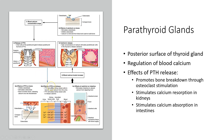Parathyroid hormone also works on the kidneys, where it stimulates the resorption of calcium back into the blood at the renal tubules, and also signals the release of calcitriol. Our third effect involves calcitriol, where it stimulates calcium absorption in the intestines. All three of these effects of parathyroid hormone function to increase our blood calcium levels.